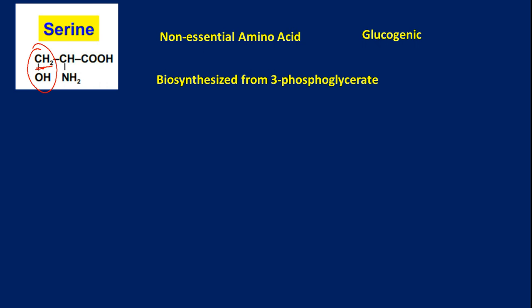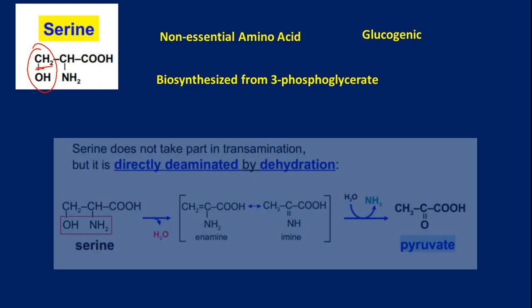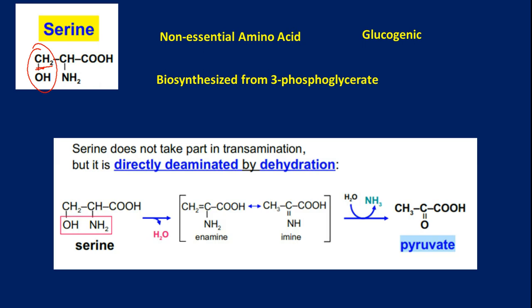Serine is biosynthesized from 3-phosphoglycerate, which can be obtained from glycolysis — in the first step of cleavage, phosphoglycerate is obtained. Serine does not take part in direct transamination. Unlike alanine, which needs alpha-ketoglutarate to shift the amino group to obtain glutamic acid, serine can be directly deaminated.